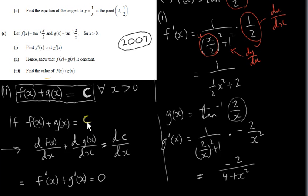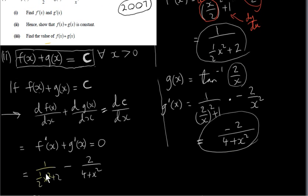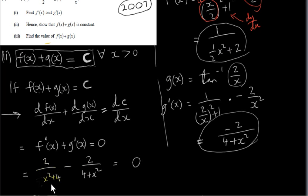So if f of x plus g of x equals a constant for all x, then f prime of x plus g prime of x must equal zero. This is what we need to show. Here is f prime of x: 2 over x squared plus 4. Here is g prime of x: minus 2 over x squared plus 4. Adding them: f prime of x plus g prime of x equals 2 over x squared plus 4 minus 2 over x squared plus 4, which equals zero.